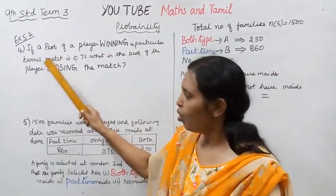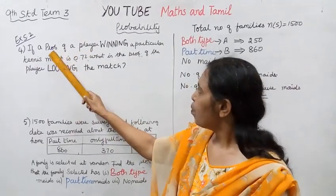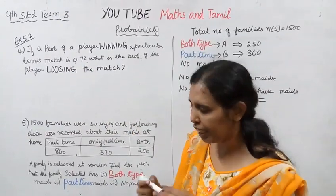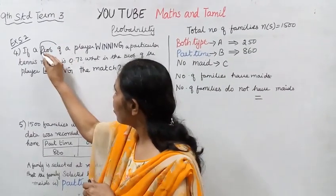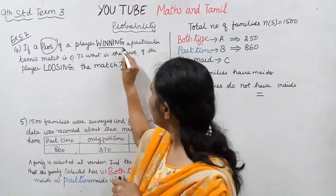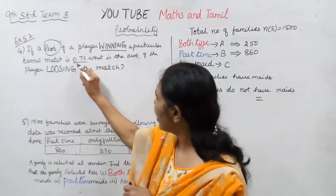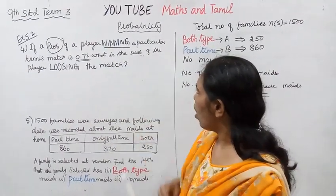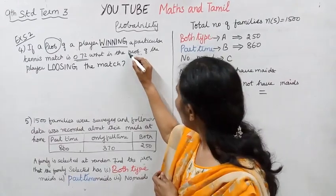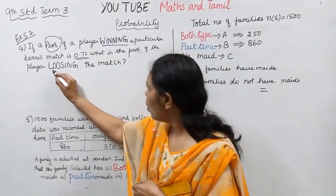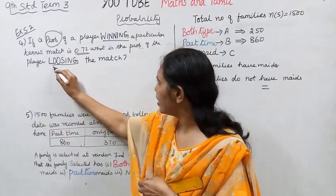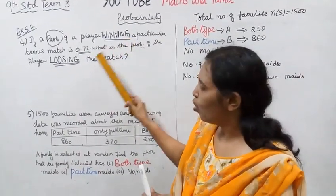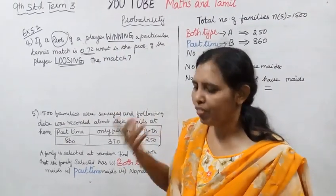The probability of a player winning a particular tennis match is 0.70. The probability of a player winning is given as 0.7. What is the probability of the player losing the match? Winning and losing — winning means not losing.